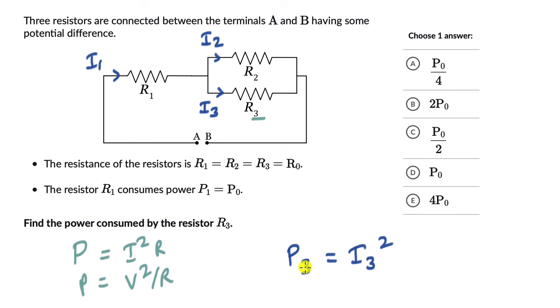So P3 we need to figure out what P3 is. P3 is equal to I3 square into R3. We know R3. R3 is equal to R0. So instead of R3 let's just replace that with R0.